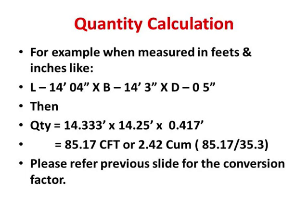A sample measurement is taken: length is 14 feet 4 inches, breadth is 14 feet 3 inches, and depth is 5 inches — assume this is a slab. Before calculating, inches are converted to feet: 14 feet 4 inches becomes 14.333 feet, 14 feet 3 inches becomes 14.25 feet, and 5 inches becomes 0.417 feet (5÷12). The total volume becomes 85.17 cubic feet, or dividing by 35.3 gives 2.42 cubic meters.